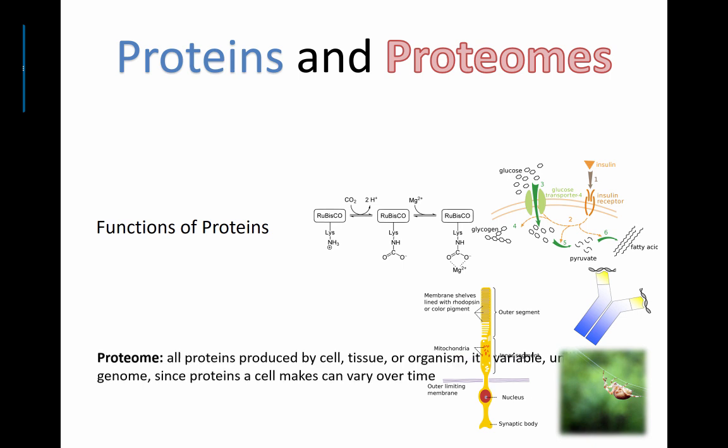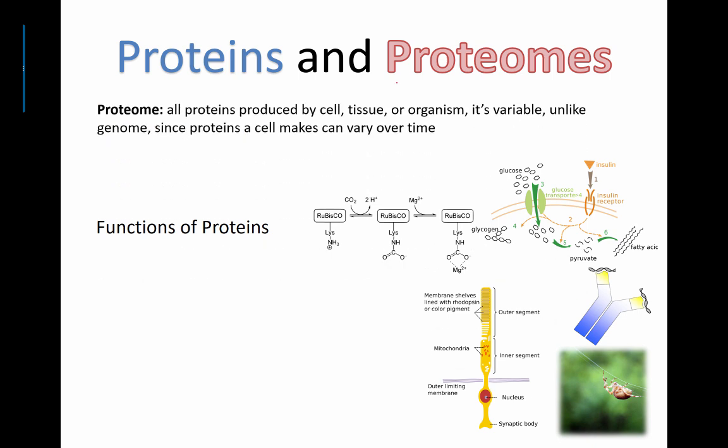So let's look at this thing called a proteome. Now you might have heard of the term genome before — like the human genome. The human genome was sequenced more than 15 years ago. They basically took volunteer DNA, and these people donated their DNA, and they sequenced all 46 chromosomes — every single letter: A's, T's, C's, G's, all of them.